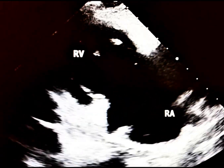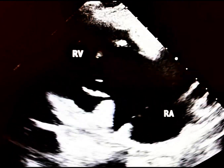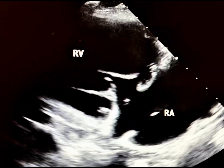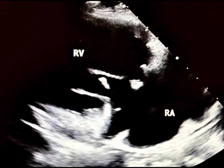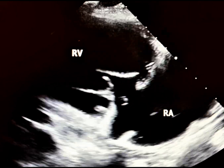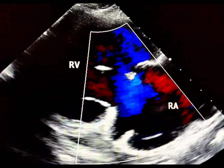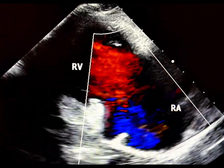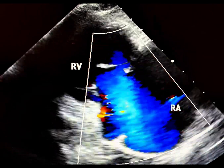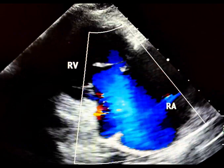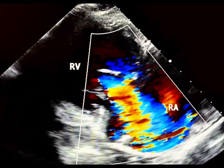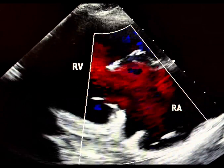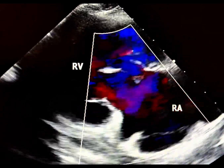This RV inflow view reveals significant tricuspid valve disease. Severe tricuspid regurgitation (TR) in a patient without other cardiac abnormalities may suggest infective endocarditis.